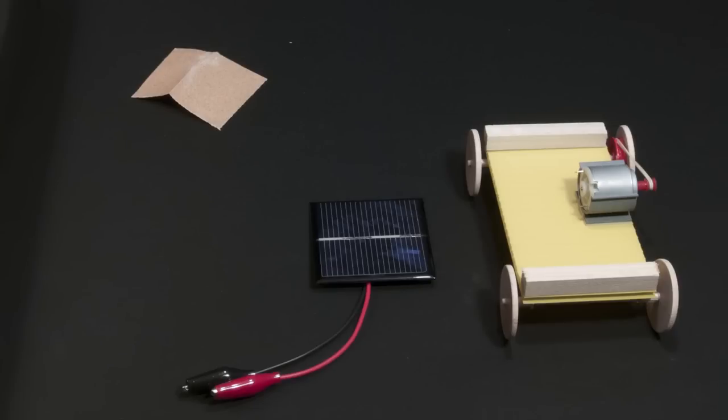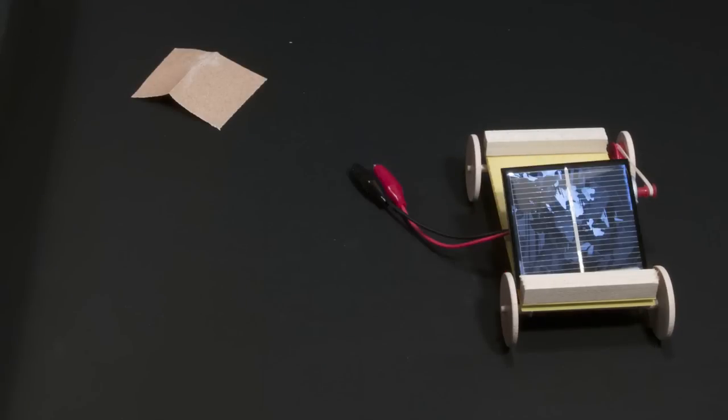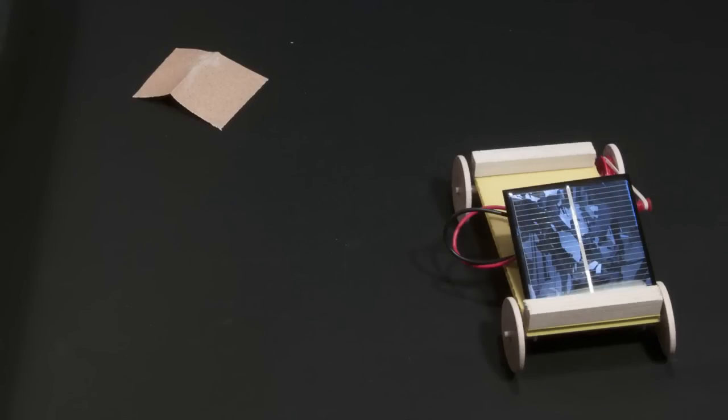The last piece to add is the solar panel, which has two alligator clips attached to it. The solar panel can lean against the wooden block and the motor. There are two small metal terminals at the back of the motor. Attach an alligator clip to each terminal.